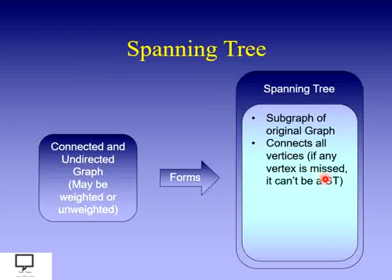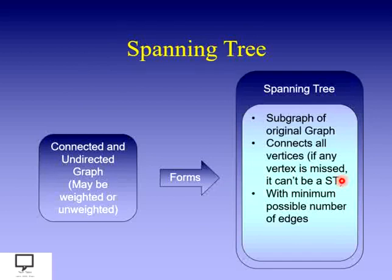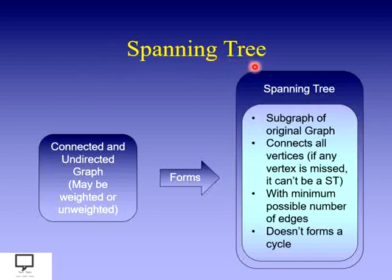A spanning tree should connect all the vertices. If any vertex is missing, then it cannot be called a spanning tree. All vertices should be connected with different edges, and with the minimum possible number of edges — if there are V number of vertices, then V minus 1 edges should be included. It should not form any cycle, as a tree cannot form a cycle; if it does, it becomes a graph.